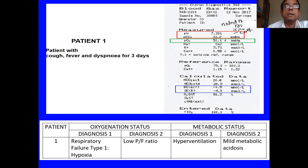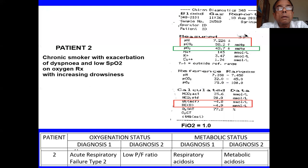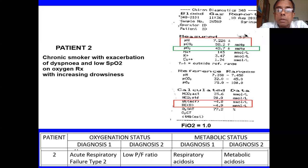Question two: patient is a chronic smoker coming with an exacerbation of dyspnea, found to have a low SpO2 on oxygen therapy and increasing drowsiness. The second patient's diagnosis is acute respiratory failure Type 2 because the CO2 is high and the PO2 is low. The person is also on 100% oxygen, so there is a low PF ratio. It's a respiratory acidosis combined with a metabolic acidosis.